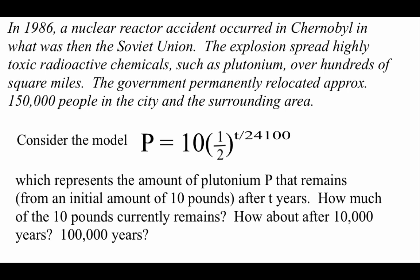Last example we're doing is kind of a real-world application type problem with some radioactive decay. So in 1986, there was a nuclear reactor accident in Chernobyl, which was then part of the Soviet Union. When this reactor exploded, it spread a bunch of radioactive chemicals, such as plutonium, over the land. So what we're going to look at is how much plutonium is left currently, after 10,000 years how much will be left, and after 100,000 years how much will be left. So we're going to use this model: P equals 10 times 1 half to the power of T divided by 24,100. And all of these numbers that we're going to plug in are T values, they're years.